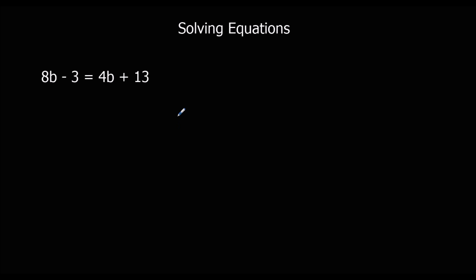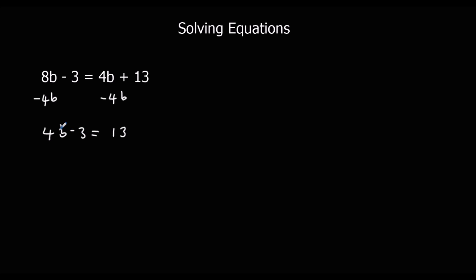Here's another example. The first step: get rid of the smallest 'b' term. We've got 8b and 4b, so the smallest is 4b. If we did it the other way around we'd get a negative, so we take away the smallest one. 8b take away 4b is 4b. The 4b minus 4b on the right side cancels out, still got minus 3. We want b by itself, so we plus 3 to both sides. On the left we have 4b and on the right we have 16.